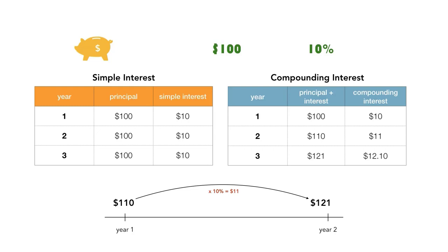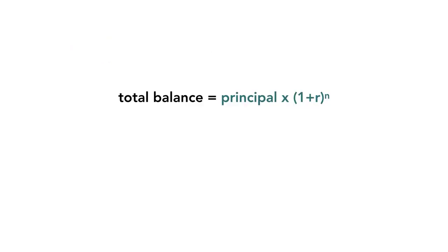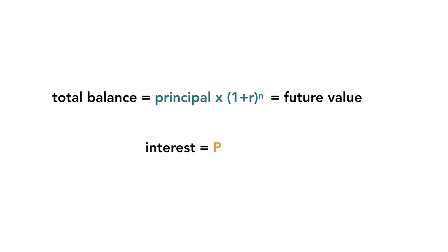You can calculate compound interest using a chart and calculating year by year like I just did. Or you can use the formula: principal times (1 plus r) to the power of n. Notice that this is the same as the future value formula that we learned in the last video. This will get you the balance in your account after n periods at the interest rate r. To get the interest earned only, you would need to use P times (1 plus r) to the n minus 1 to subtract the principal from the future value.